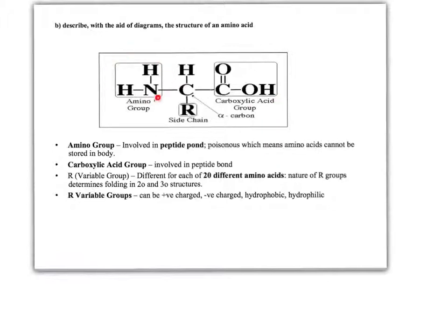At the other end of the molecule we have the amino group, which is nitrogen bonded to two hydrogens. This is the bit that confers toxicity on amino acids, which is why we cannot store amino acids in the liver. We have to break them down — we chop the amino group off and convert it into urea, the yellow pigment in your urine, and the rest of the molecule gets used in respiration.